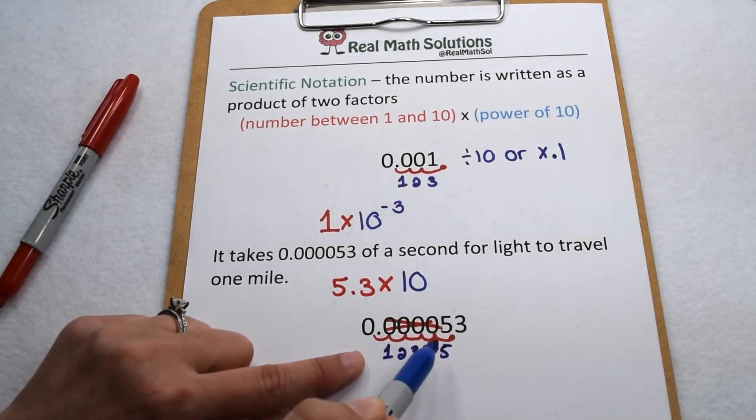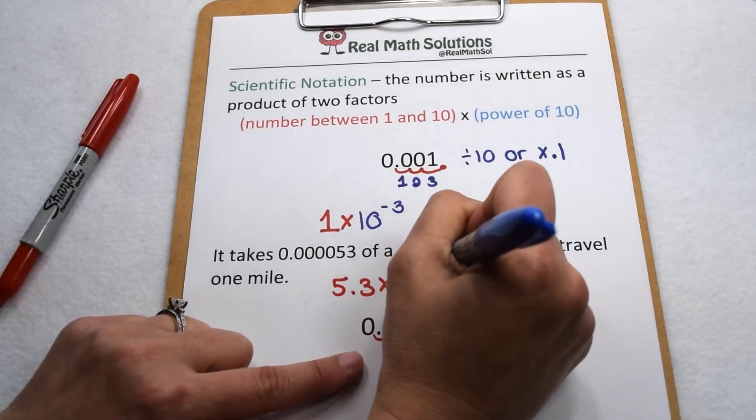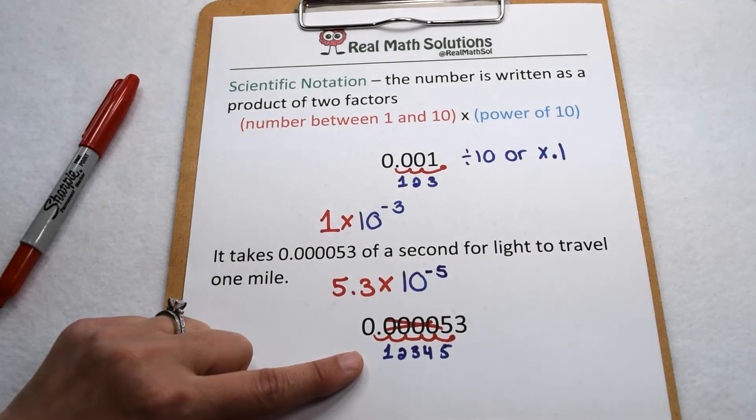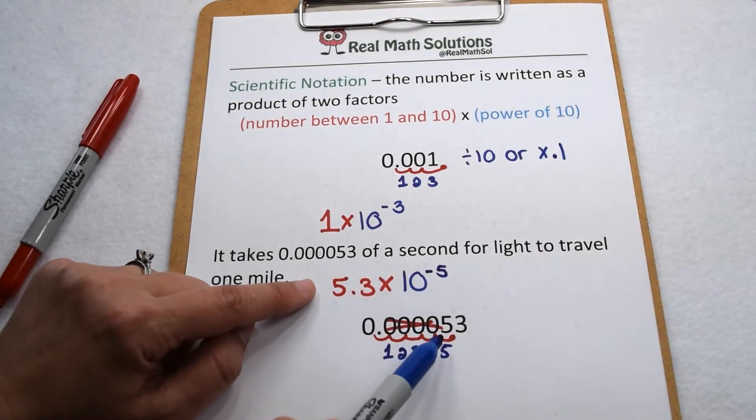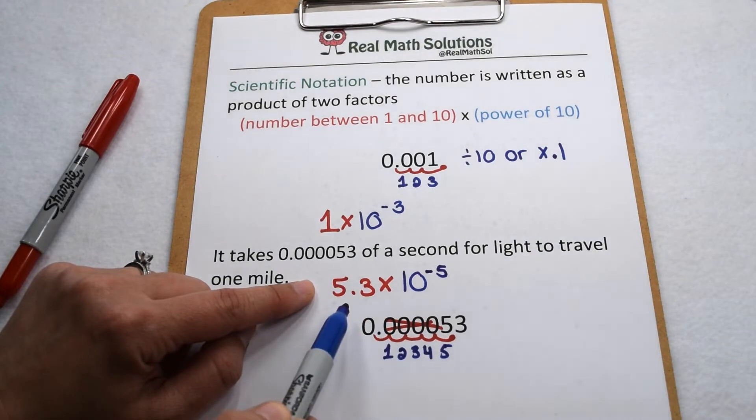But we move that decimal to the right which means we're dividing by 10 or multiplying by 1 tenth. So again our exponent needs to show that and it's going to be negative 5. So in scientific notation, 53 millionths of a second would be written as 5.3 times 10 to the negative fifth.